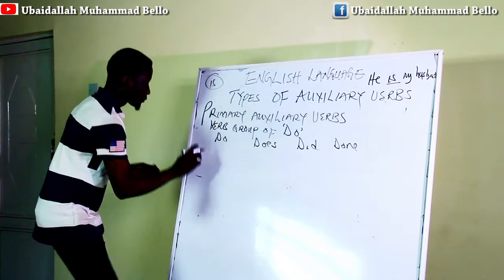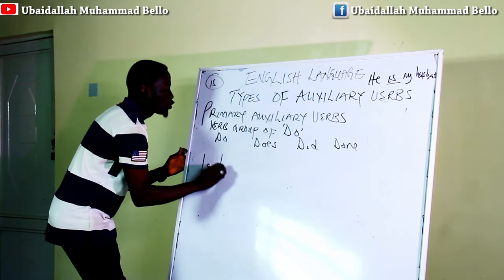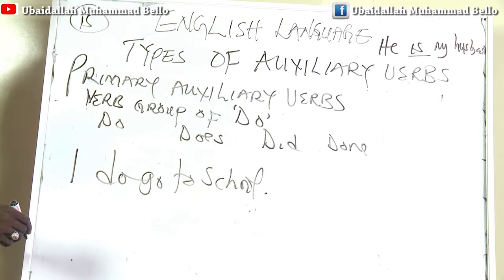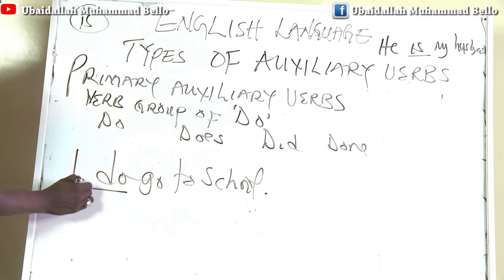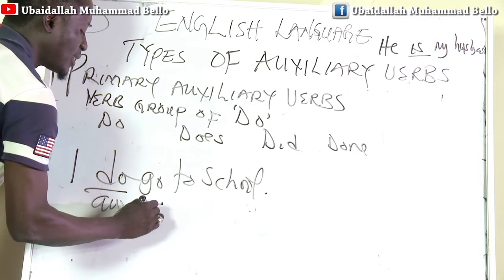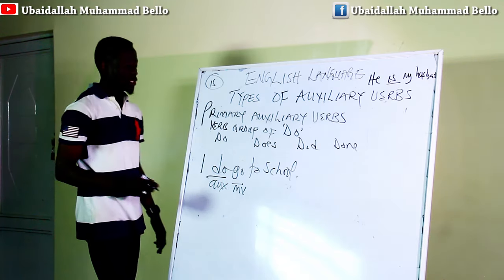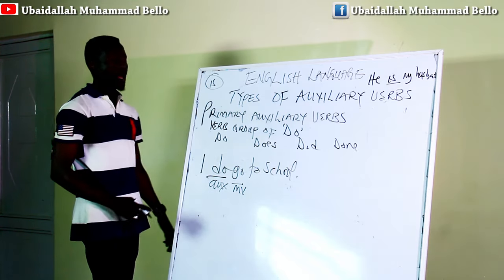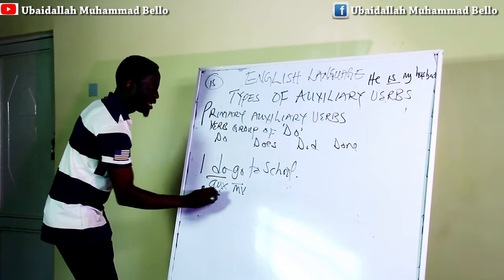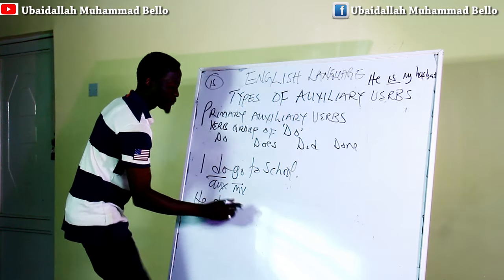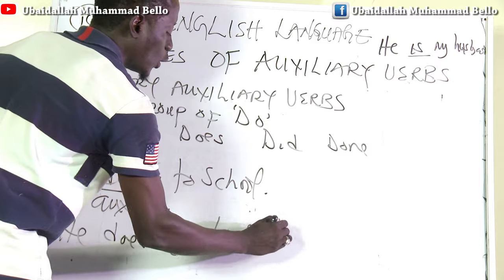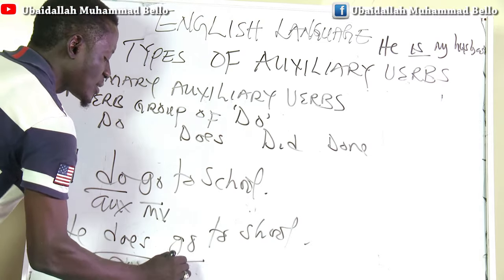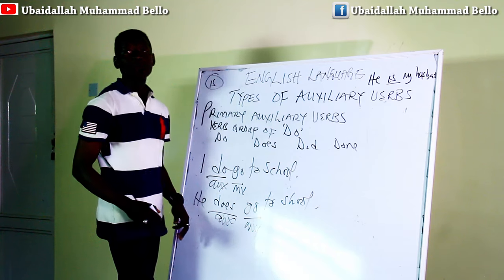Starting with 'do,' somebody would say: 'I do go to school.' Here 'do' is auxiliary and 'go' is the main verb. So in this context, 'do' is called auxiliary and 'go' is the main verb. For 'does,' you now say: 'He does go to school.' 'Does' here is our auxiliary while 'go' still serves as our main verb.